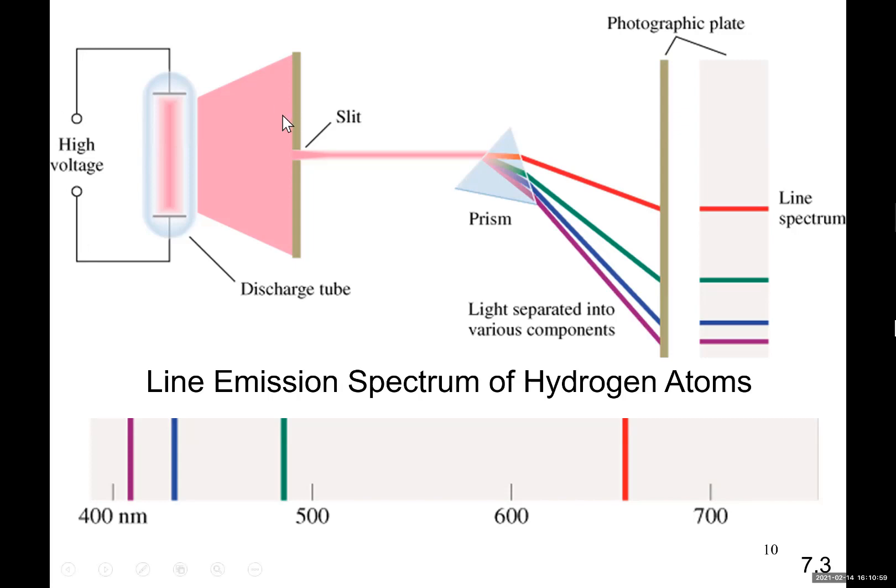When they passed the red color through a small slit and then passed it through a prism, they were able to separate different wavelengths of the light.